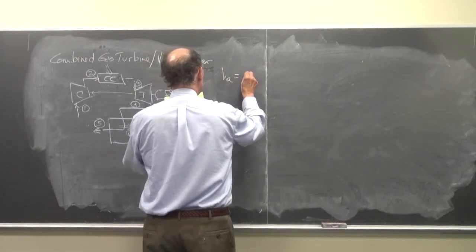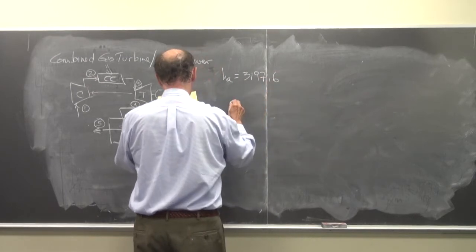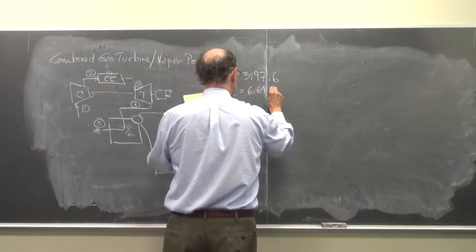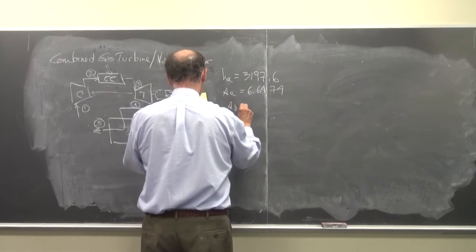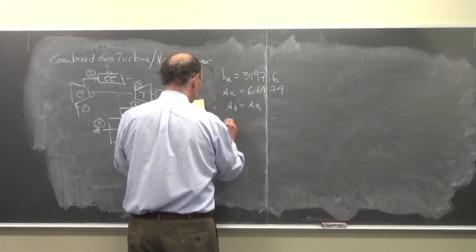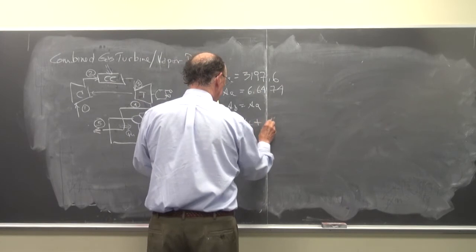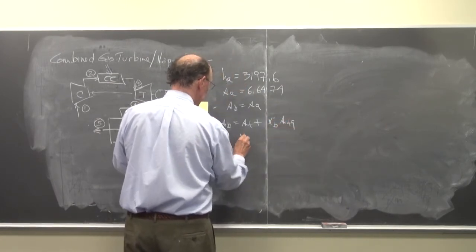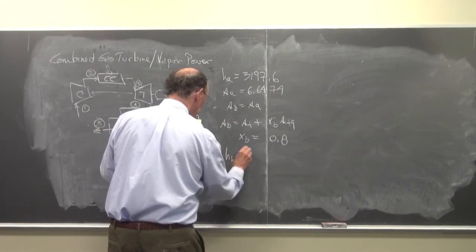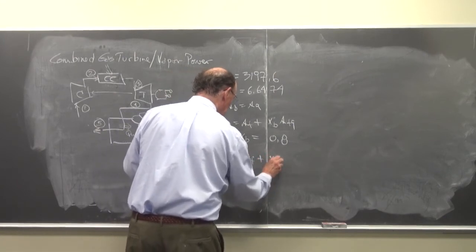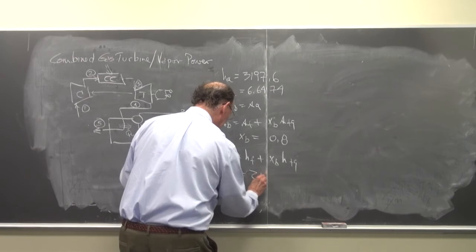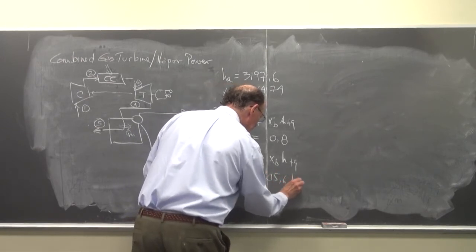So HA is equal to 3197.6. SA is equal to 6.6474. SB is equal to SA. And I'm going to get that SB is equal to Sf plus XB times Sfg. You can do this and you'll get that XB is 0.8. And HB is equal to Hf plus XB times Hfg. And you'll find out that that is equal to 2105.6 kilojoules per kilogram steam.